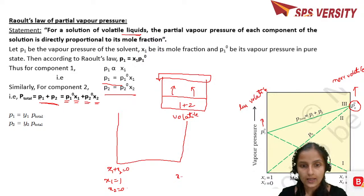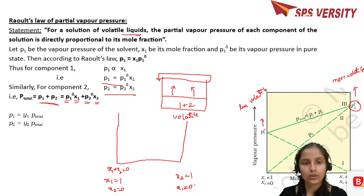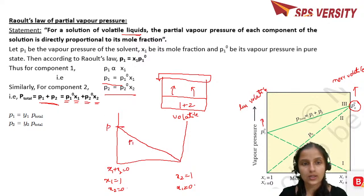At the other end x2 equals 1 and x1 equals 0; the sum of mole fractions again becomes unity. Since P1 = P1°x1 is in the form of a straight line, this will be the straight line obtained for P1, intersecting at P1°. Similarly for P2°, you get a straight line for P2, and the sum P1 plus P2 gives P total.